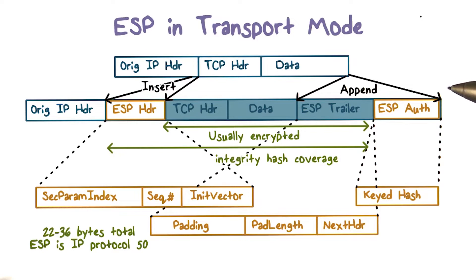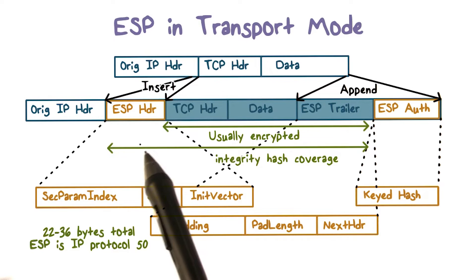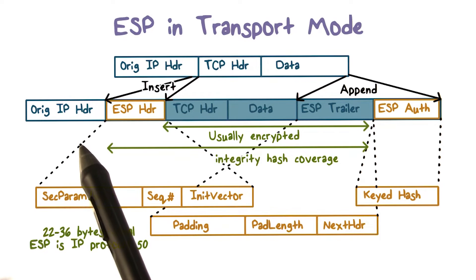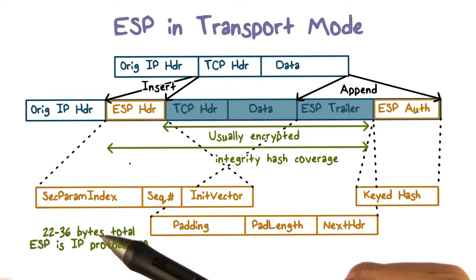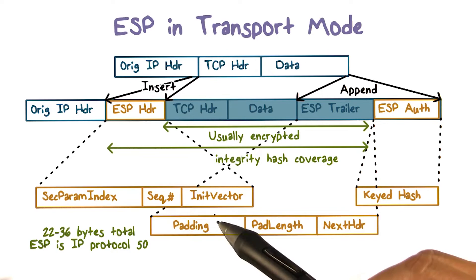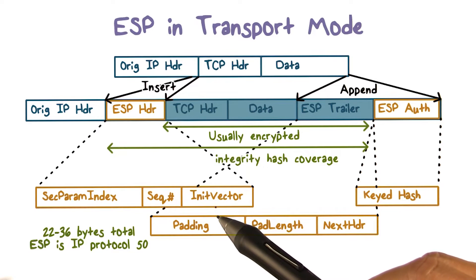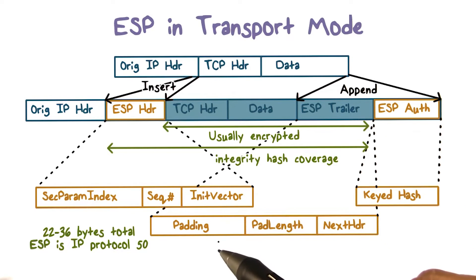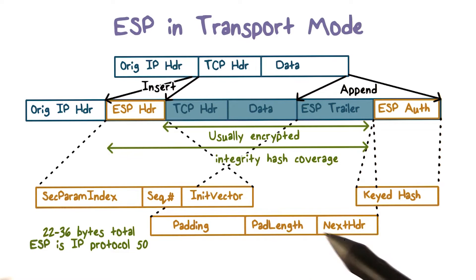Here's a new packet layout when IPsec operates in transport mode and uses ESP. An IPsec header, in this case the ESP header, is inserted after the original IP header. The ESP header includes the security parameter index and a sequence number, and we will discuss these shortly. The ESP header also includes the IV for encryption. The ESP trailer has the padding information and pointer to the next header, such as the TCP or UDP header.